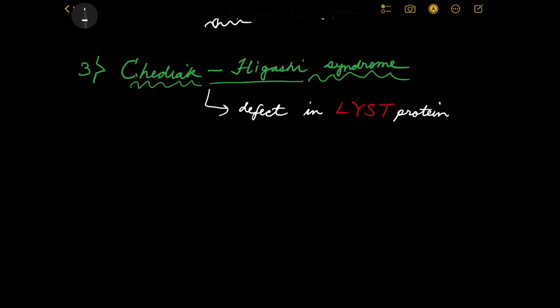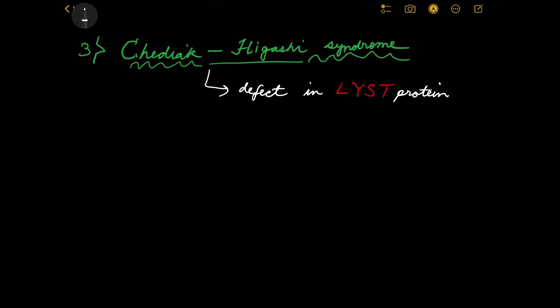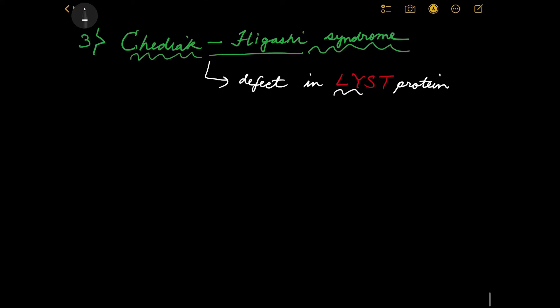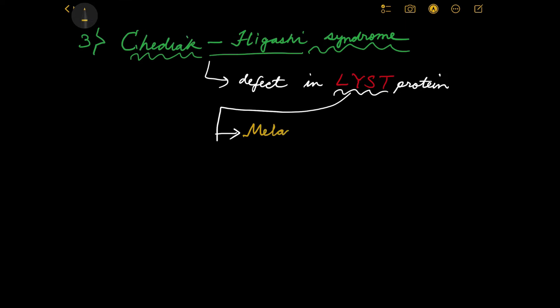This defect means there would obviously be defective inflammation and defective inflammatory and immunological responses, because inflammation is a defense mechanism — our body is trying to rid itself of problems. But that's not all: LYST protein has been found to be very important not only for the inflammation process, but also in other cells, for example melanocytes.